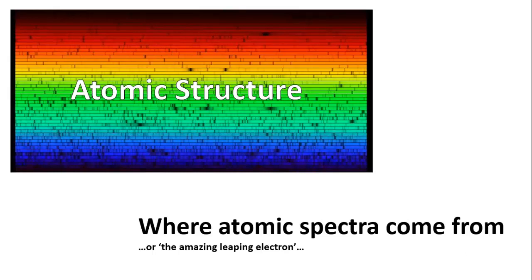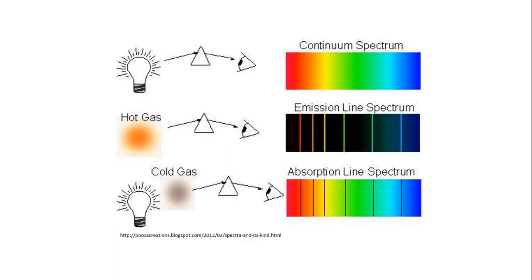So, to recap from the last video. In the 19th century, various scientists found that elements absorbed and emitted light at certain characteristic wavelengths. Each element had a distinctive pattern of wavelengths that was like a fingerprint for that element.